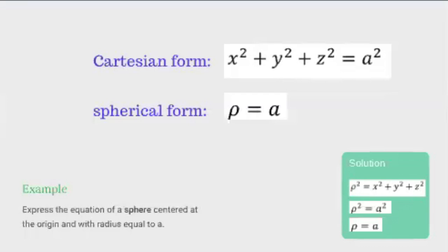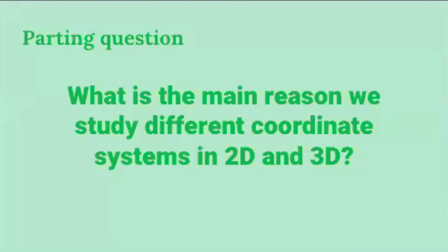A nice illustration of conversions is to show how simple an equation of a sphere becomes in spherical coordinates. Consider the equation of a sphere centered at the origin with radius a units in Cartesian coordinates: x² + y² + z² = a². Since ρ² = x² + y² + z², then ρ² = a². And since ρ is always non-negative, we simply write ρ = a. Always remember that one of the main motivations in studying different coordinate systems — especially Cartesian, polar, cylindrical, and spherical — is to simplify the evaluation of multiple integrals.